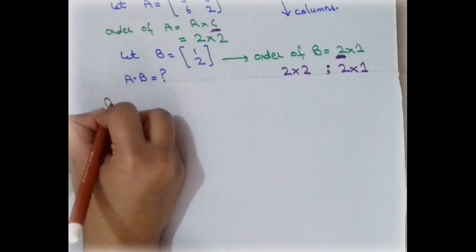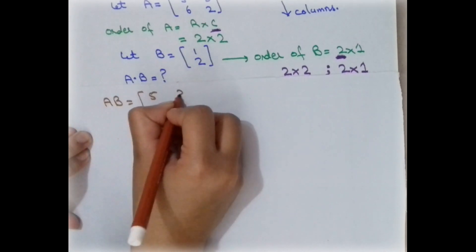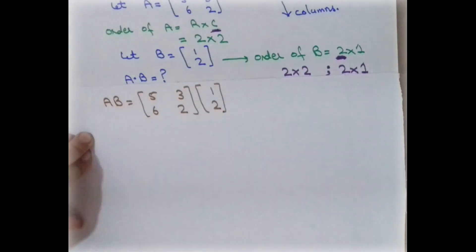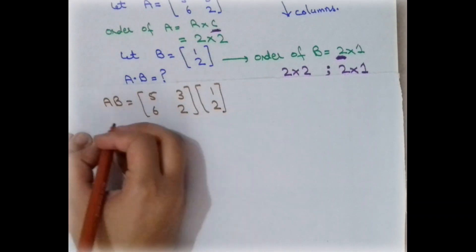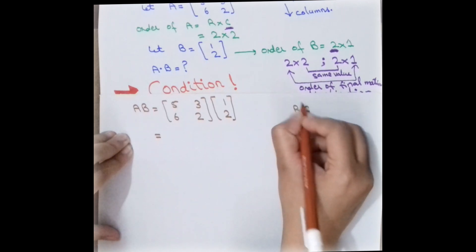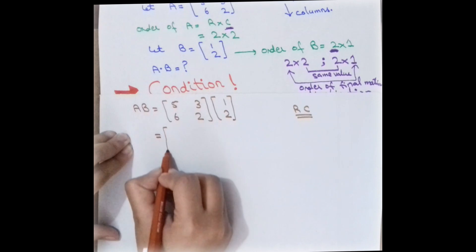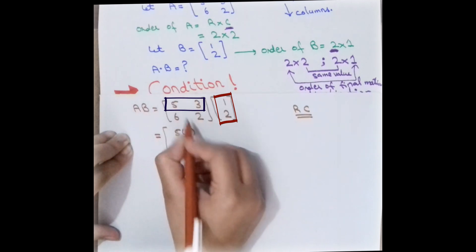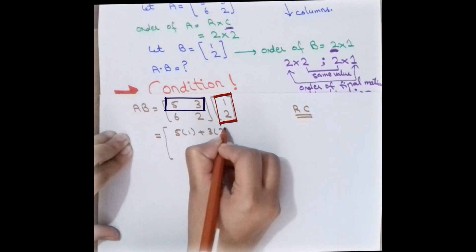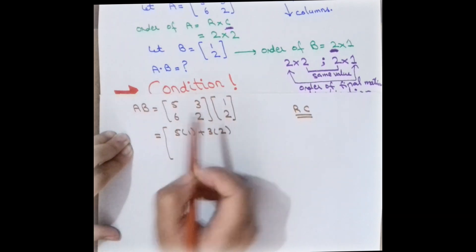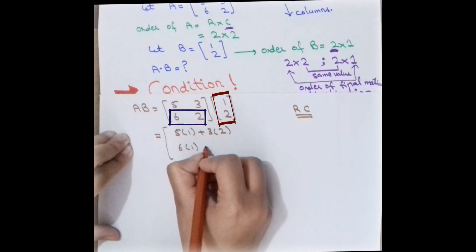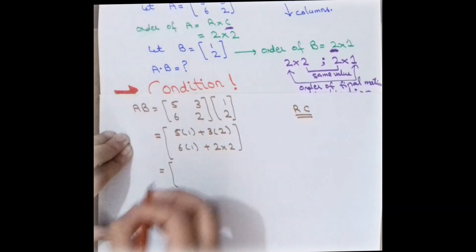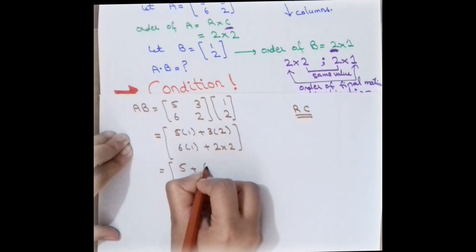We have to find A×B: matrix A is [5, 3; 6, 2] multiplied by matrix B which is [1; 2]. Check the condition — it is satisfied. Always remember the RC rule: multiply Row with Column. So this row multiplied by this column gives: 5×1 plus 3×2, and the next row gives 6×1 plus 2×2.